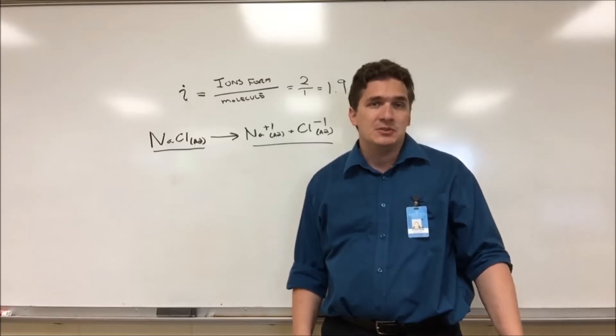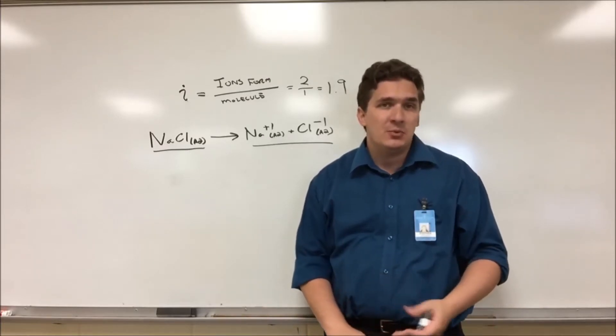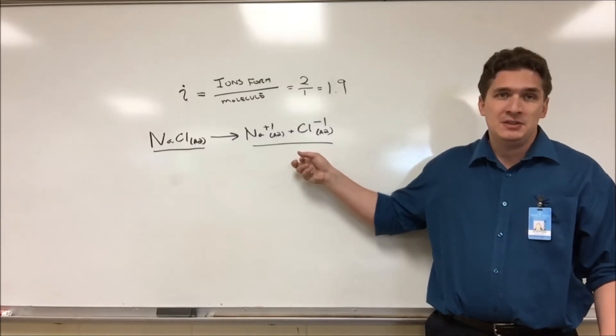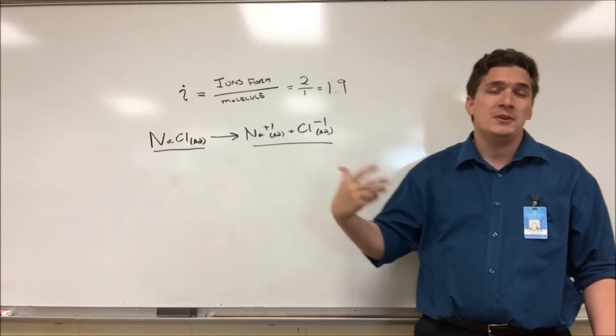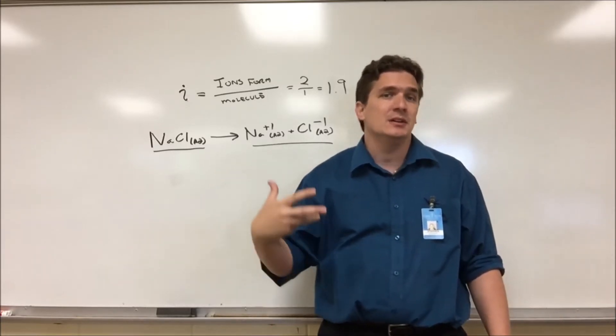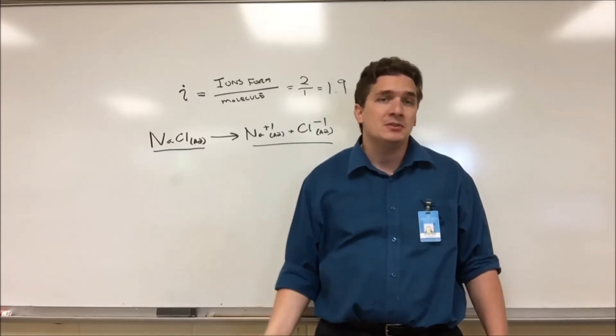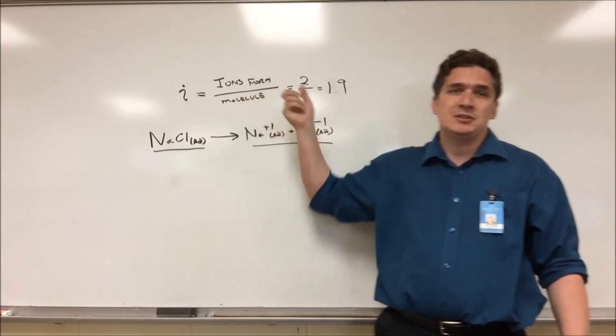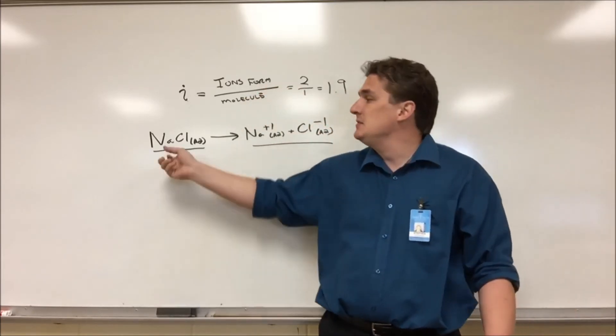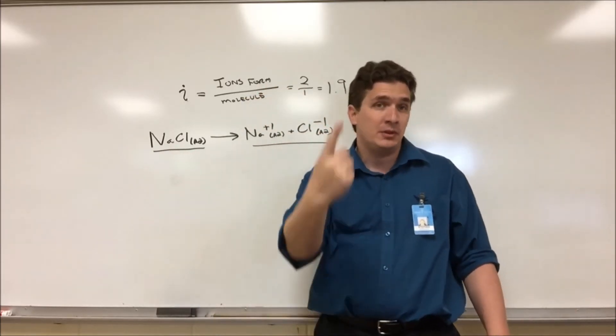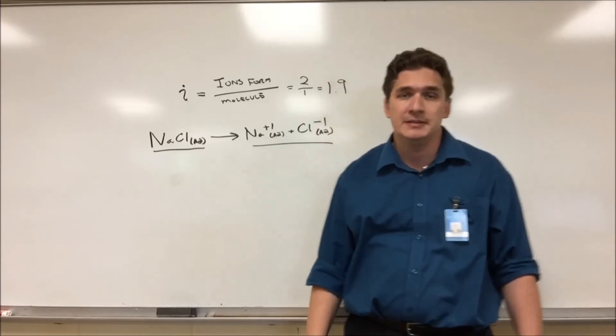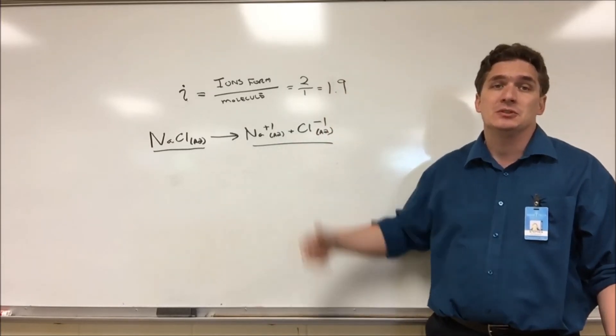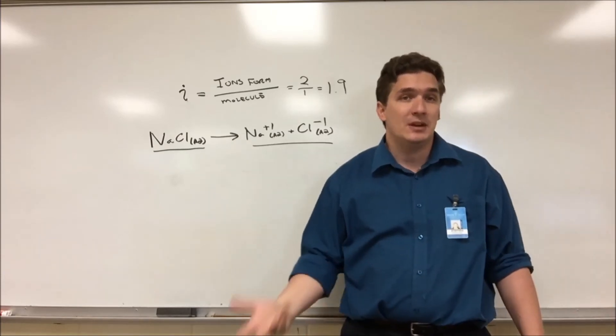The colligative properties of solutions - the change in the boiling point, the change in the freezing point, the change in the vapor pressure - these depend more on the number of things you have in solution and not what their nature is. It doesn't matter if they're ions, it doesn't matter if they're molecules, it just matters how many you have. And so this Van't Hoff factor here is a correction factor. It basically says that even though you're chunking sodium chloride in and you're really only chunking a molecule of sodium chloride in, it's actually breaking into two things. And we need to take that into consideration when we start looking at the changes in things like boiling points and vapor pressures.